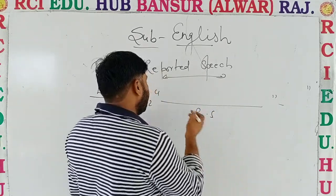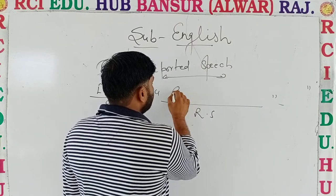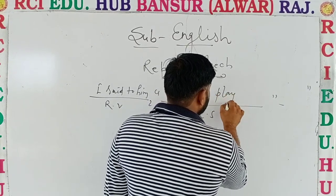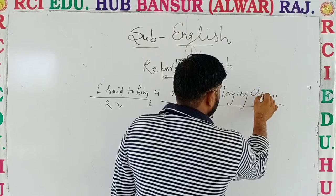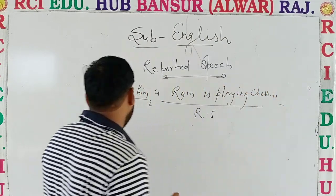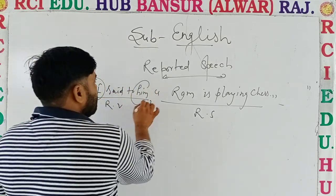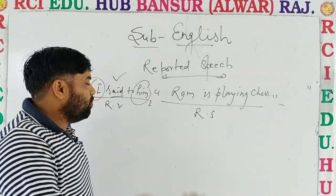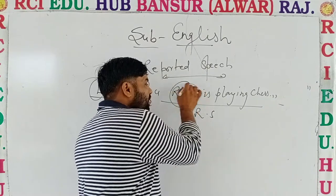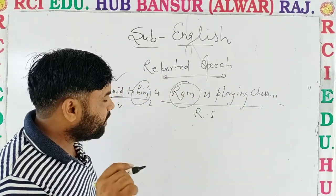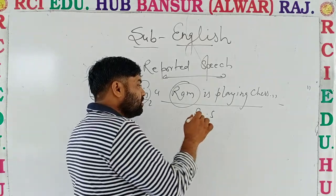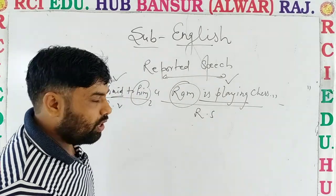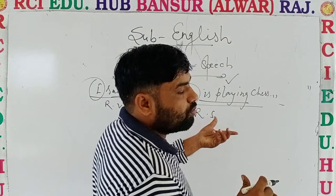For example, a sentence like 'Ram is playing chess.' We already came to know about subject, object, and verb — how to change them. We also talked about pronouns and how to change them. Every student got it. Now we are just talking about tense — how will it change? So let's focus on that.